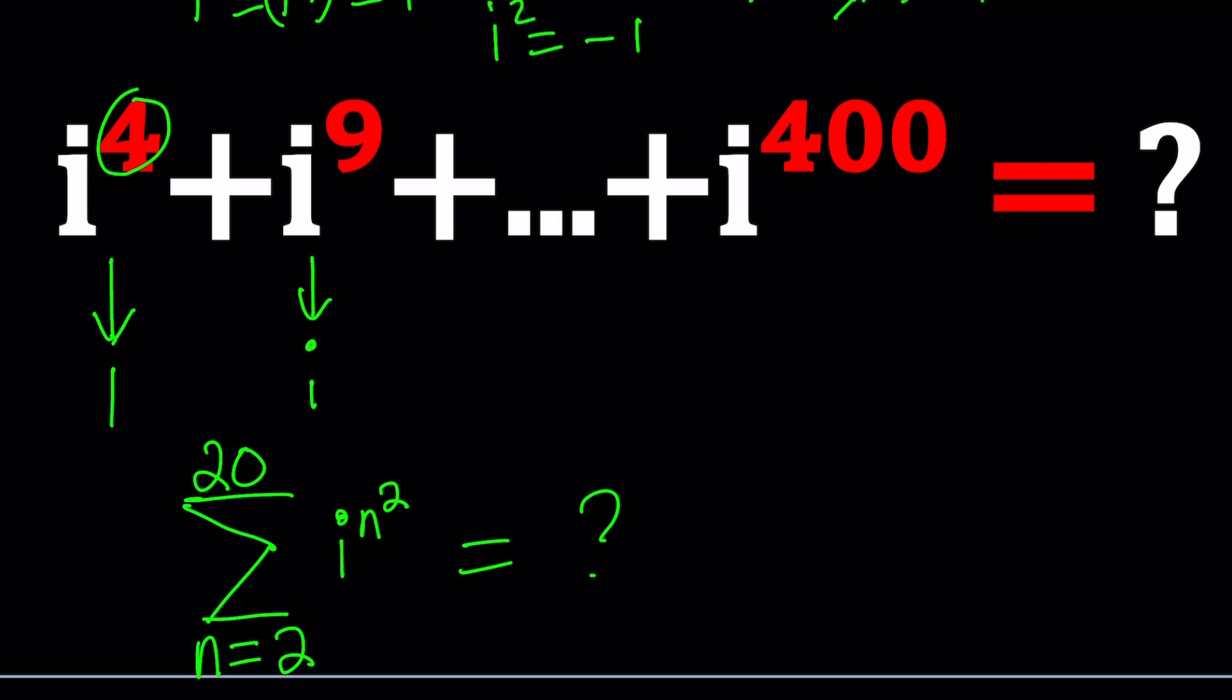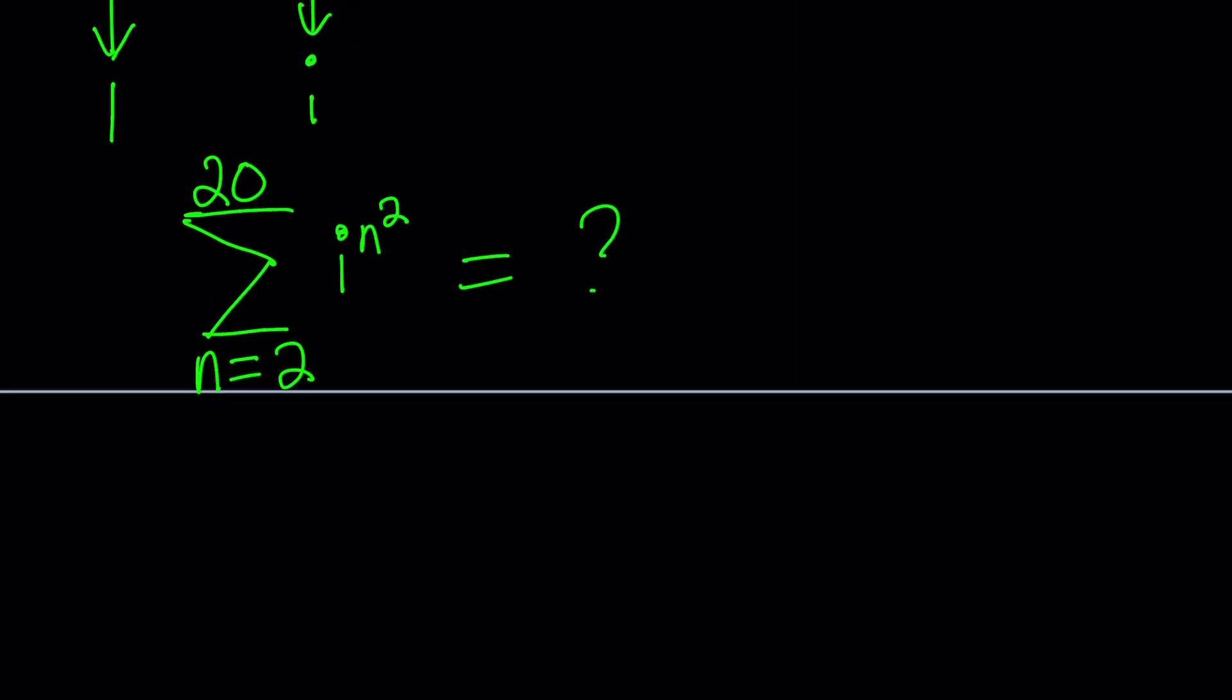So the exponent of i is an integer in this case, a perfect square, but it's still an integer, right? It can be either odd or even. Think about it. 4 is odd. No, I don't think so. Okay. Never mind. 4 is even. 9 is odd. So what do you do? You consider two cases.